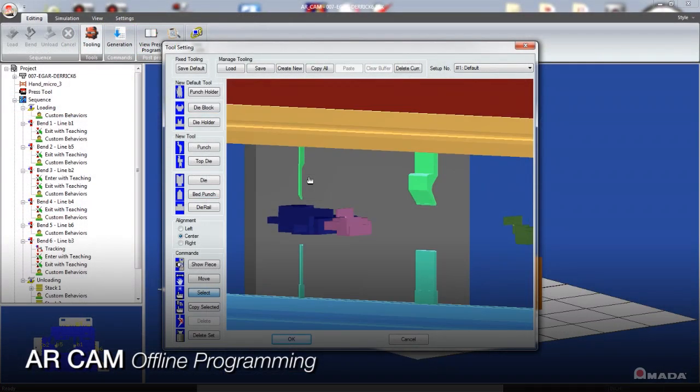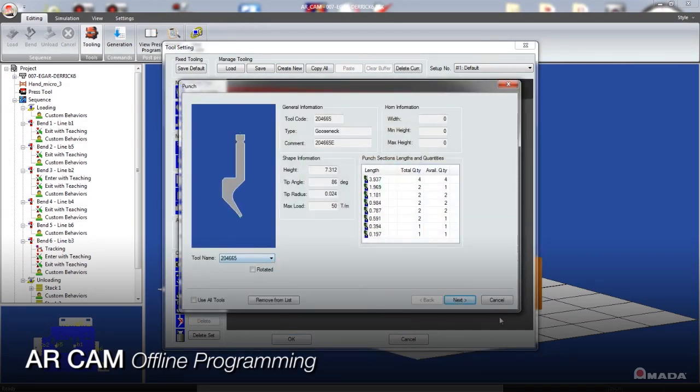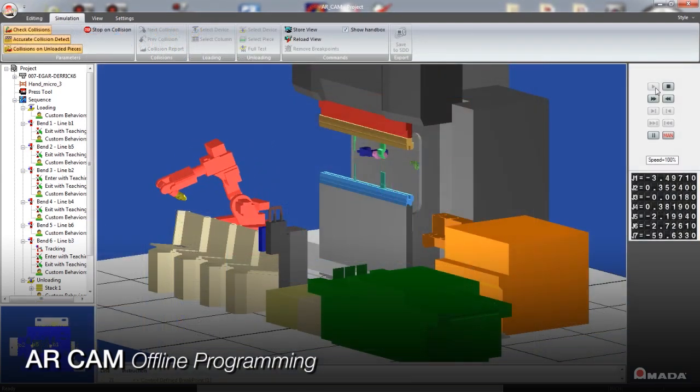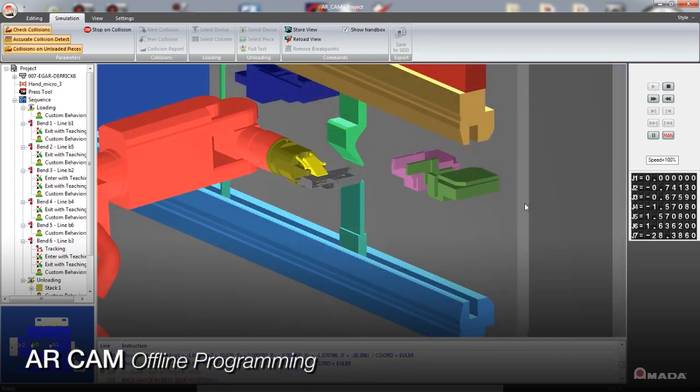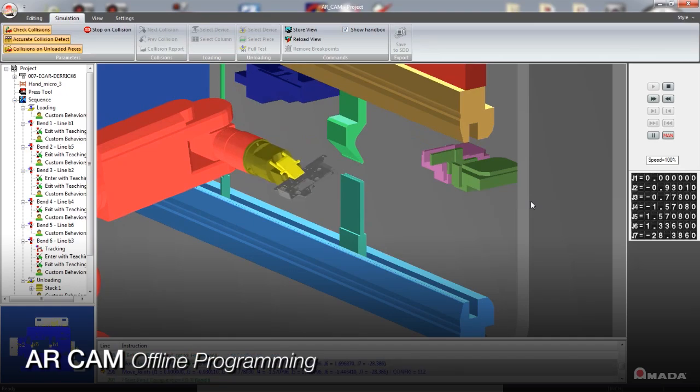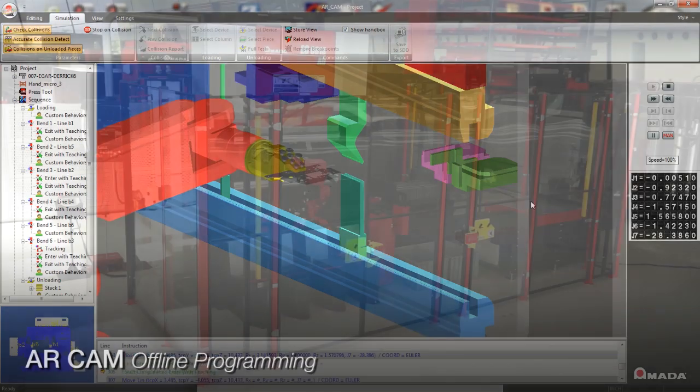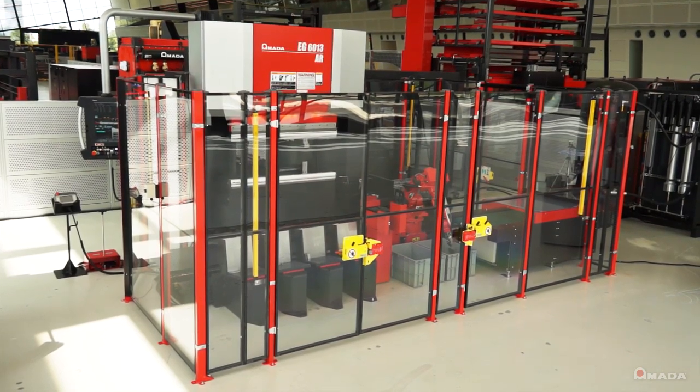Offline programming is achieved using ARCam. This software helps minimize the learning curve of the EGAR by offering users the ability to program this fully integrated system in a 3D environment. Once programs are generated, they are stored on your company's network and retrieved at the AMNC3i control.